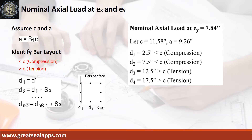To get the nominal load at EY equals 7.84 inches, let neutral axis C equals 11.58 inches and depth of stress block A equals 9.26 inches. Given column size of 20 inches and steel covering of 2.5 inches, the distances and force types for each layer are: D1 equals 2.5 inches (compression), D2 equals 7.5 inches (compression), D3 equals 12.5 inches (tension), D4 equals 17.5 inches (tension).